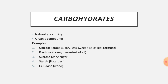The first biomolecule we discuss is carbohydrates. Carbohydrates are naturally occurring organic compounds. Examples include glucose, which is a grape sugar that is less sweet and is also called dextrose. Dextrose drips are administered to patients with diarrhea or extreme weakness. Dextrose is essentially glucose, and glucose is the major source of instant energy, so dextrose drips are given to dehydrated or very weak patients who need instant energy.